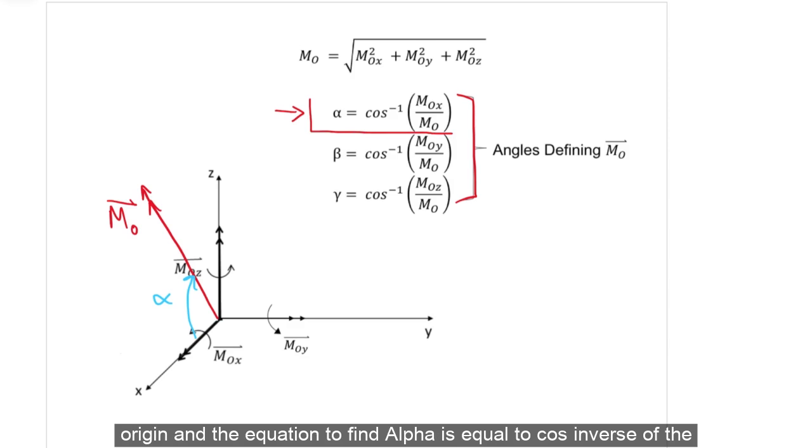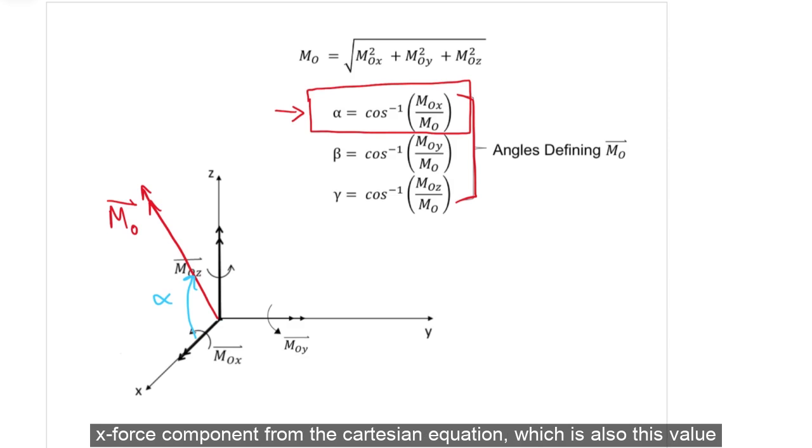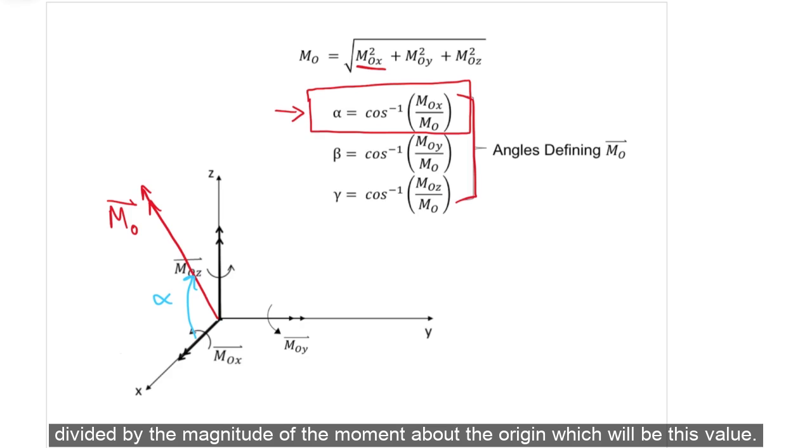The equation to find alpha is equal to cos inverse of the x-force component from the Cartesian equation, which is also this value, divided by the magnitude of the moment about the origin, which would be this value.